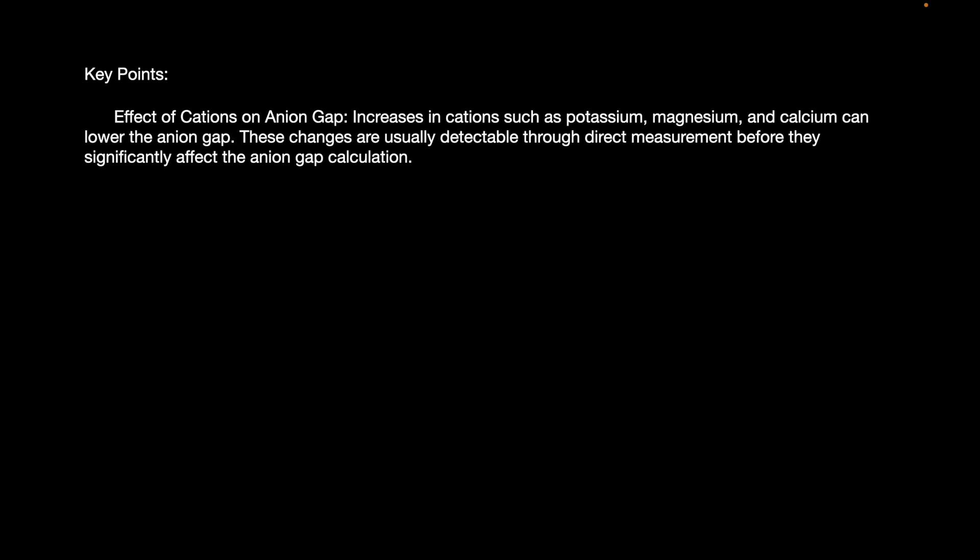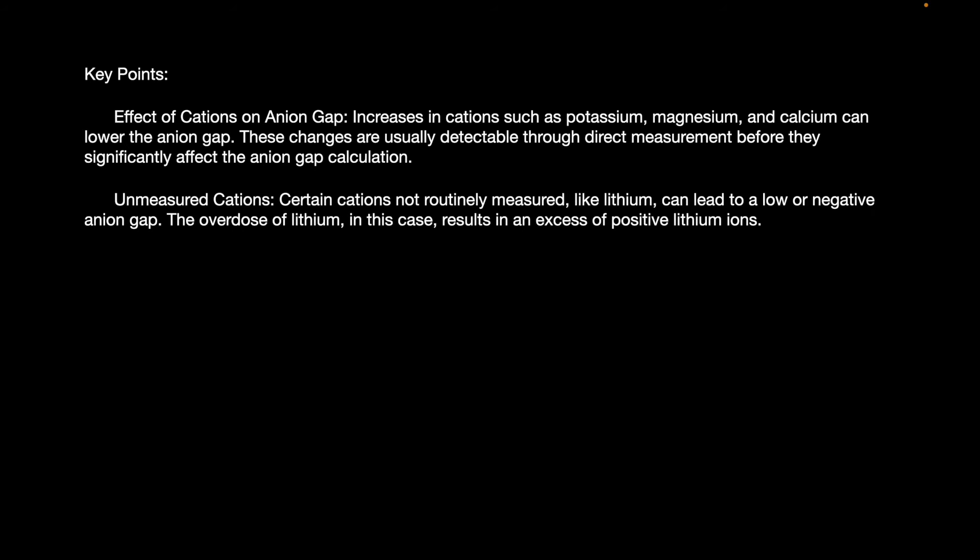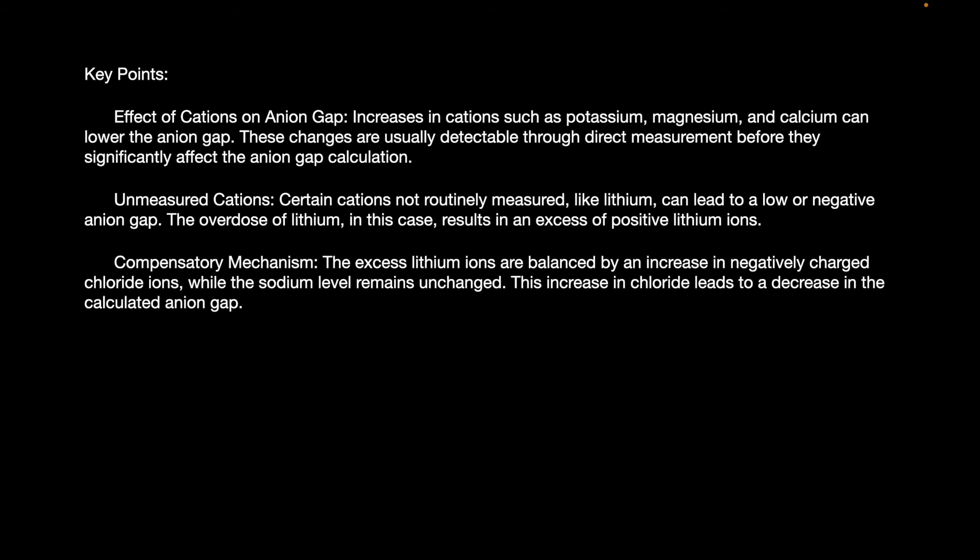These changes are usually detected through direct measurement. Certain cations not routinely measured — like lithium — can lead to a low or negative anion gap. The overdose of lithium results in excess positive lithium ions, balanced by an increase in negatively charged chloride while sodium levels remain unchanged, thereby decreasing the calculated anion gap.